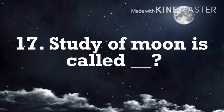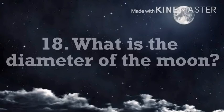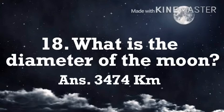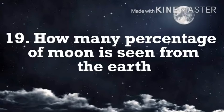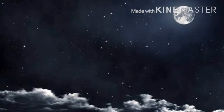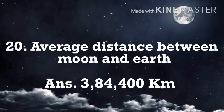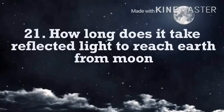The study of the moon is called selenology. What is the diameter of the moon? 3,474 kilometers. How much percentage of the moon do we see from the Earth? 59%. What is the average distance between the moon and the Earth? 384,400 kilometers.